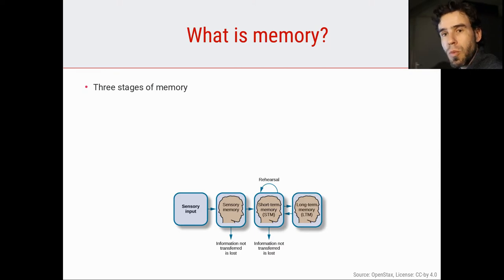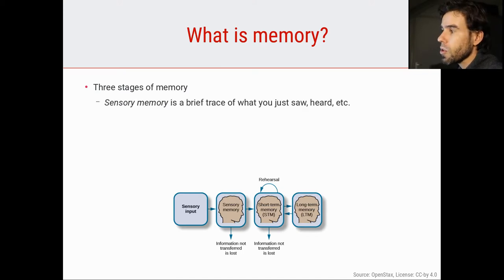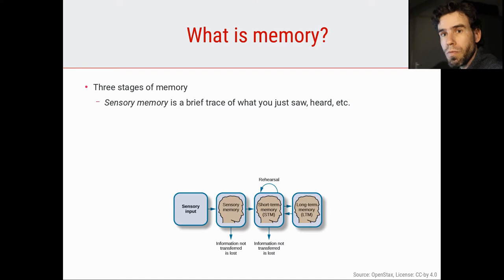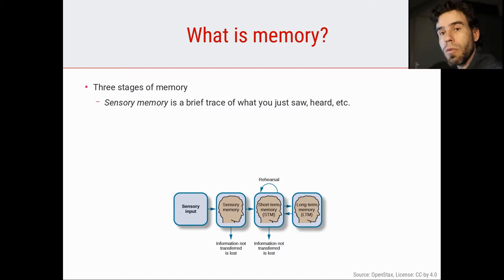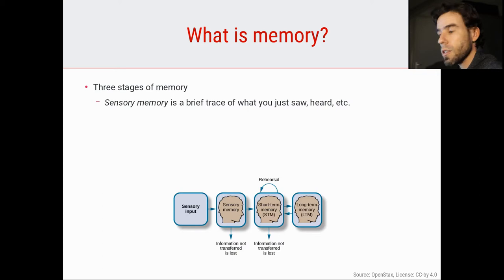Generally speaking, we separate three stages of memory, which we're also going to describe separately in the next videos. Sensory memory is a brief trace of what you just saw. So if you see a visual stimulus, for example, for a very brief moment, that visual stimulation sort of reverberates in your visual brain areas.